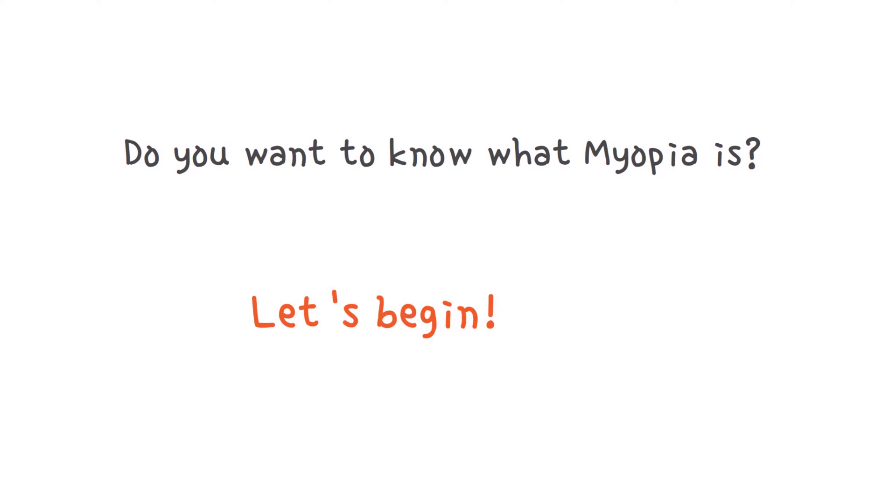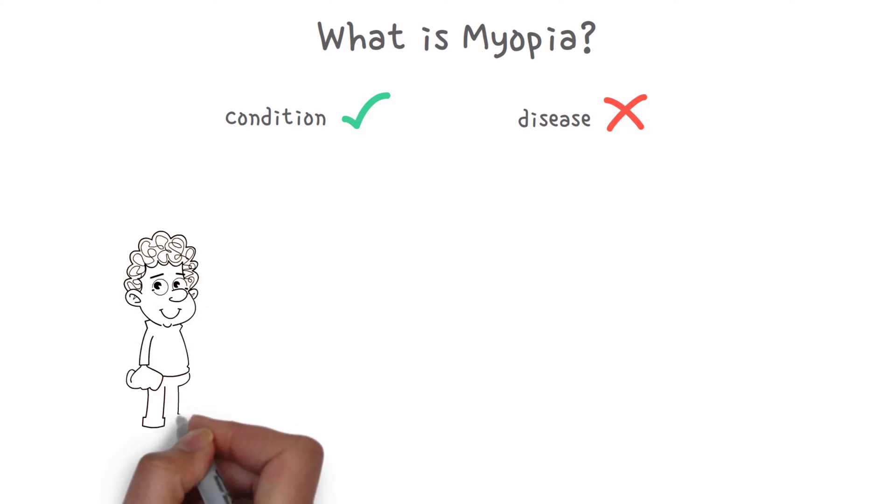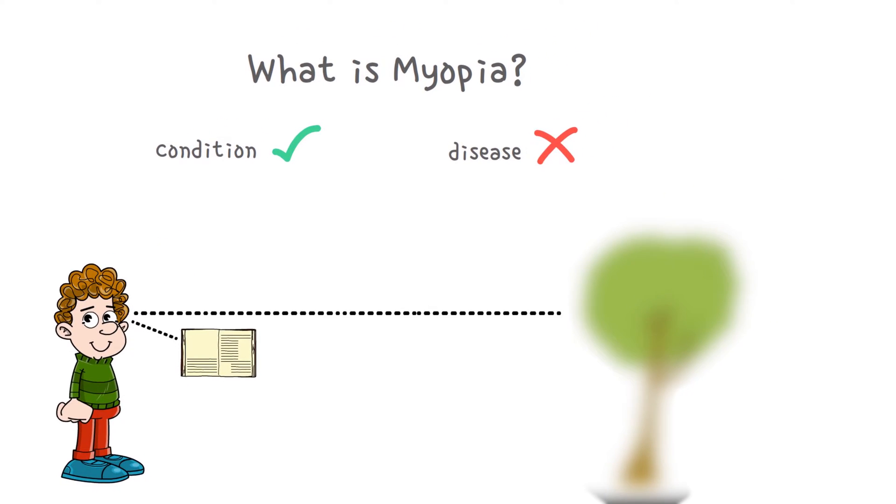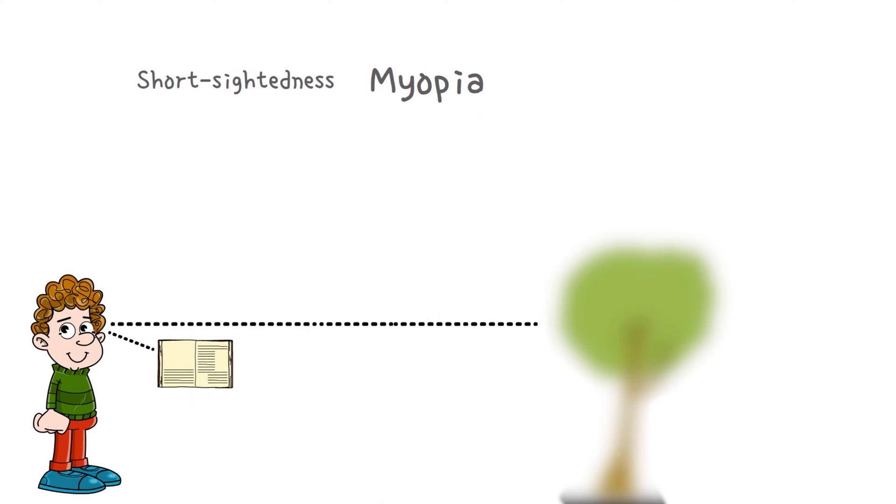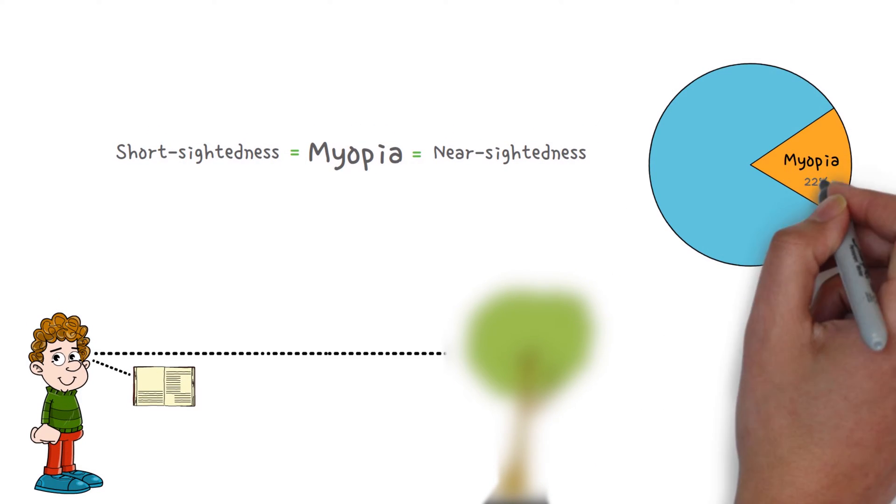Do you want to know what myopia is? Let's begin. Myopia is a condition, not a disease, in which one can see near objects clearly but far objects appear blurry. Myopia is also known as short-sightedness or nearsightedness, and it affects 1.5 billion people or 22 percent of the global population.